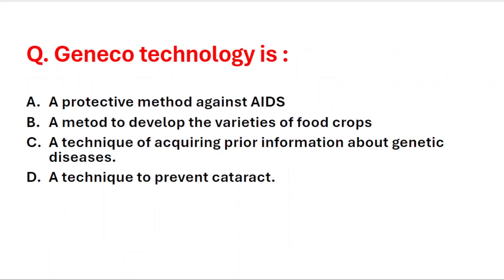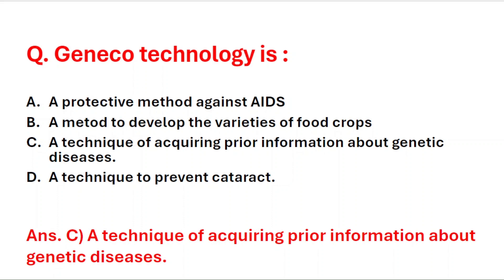Next question: Genico technology is — A: a protective method against AIDS, B: a method to develop varieties of food crops, C: a technique of acquiring prior information about genetic disease, D: a technique to prevent cataract. Genico technology is a technique of acquiring prior information about genetic disease, so option C is the right answer.